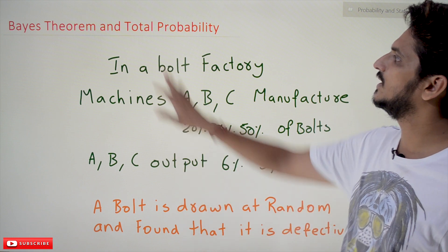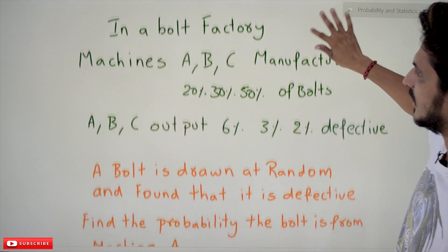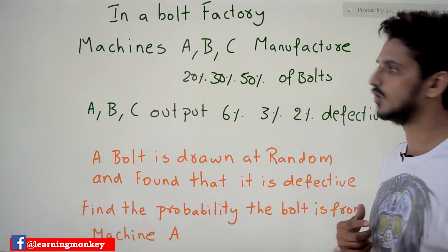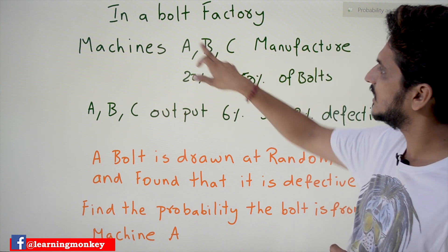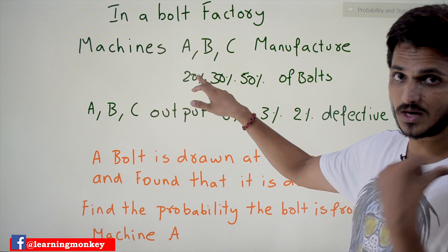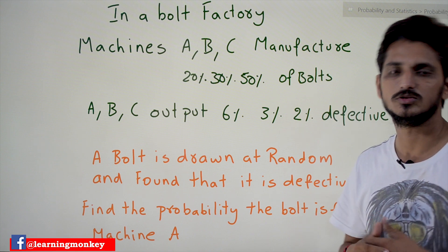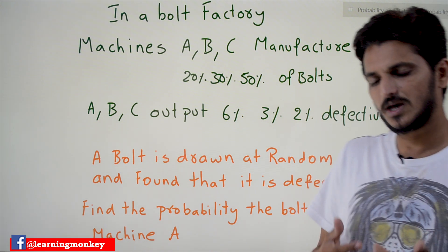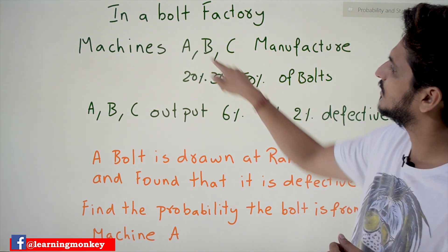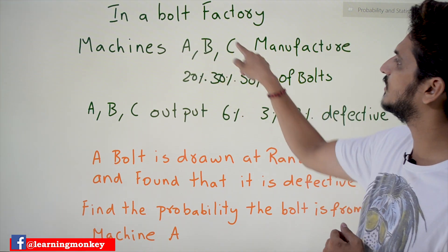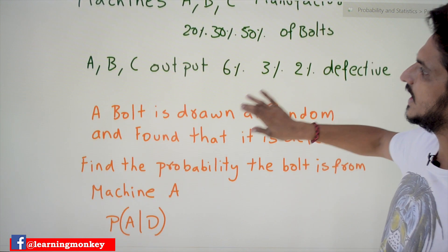In a bolt factory, three machines A, B, and C are manufacturing bolts. Machine A is contributing 20% of the bolts in the market, B is contributing 30%, and C is contributing 50%. What this means is: if you buy a bolt from the market, 20% are from machine A, 30% from B, and 50% from C.